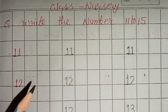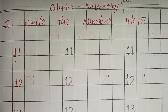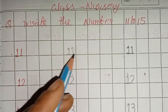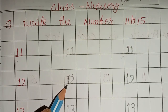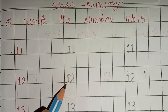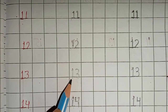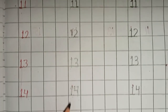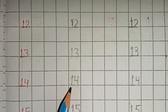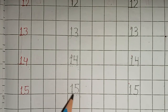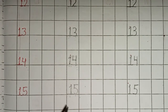जो numbers हमने write किये हैं, हम उसको फिर से count करेंगे। ओके — 11, 12, 13, 14, 15.